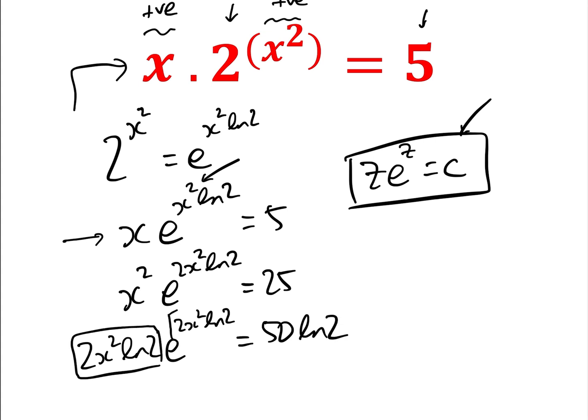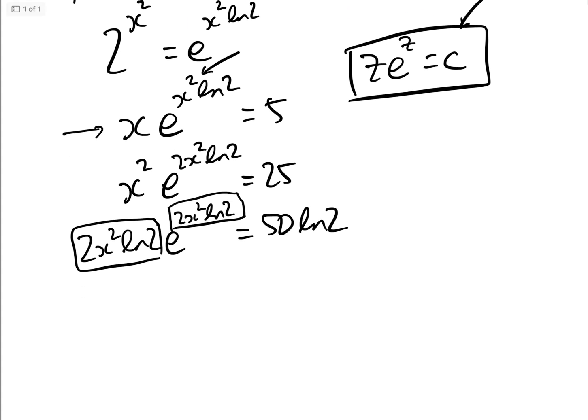Now if we look here, we have our equation in the form z·e^z = c, and so we can basically just read off our answer: 2ln2·x² = W(50ln2).